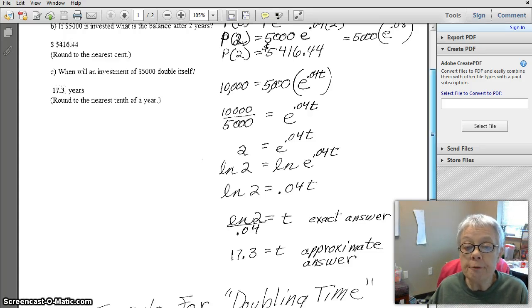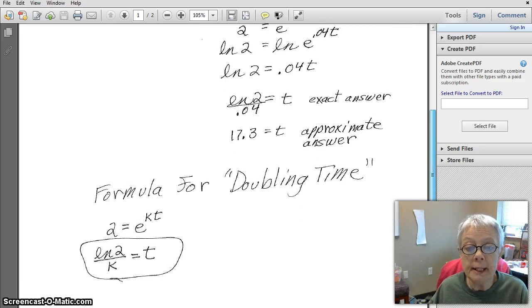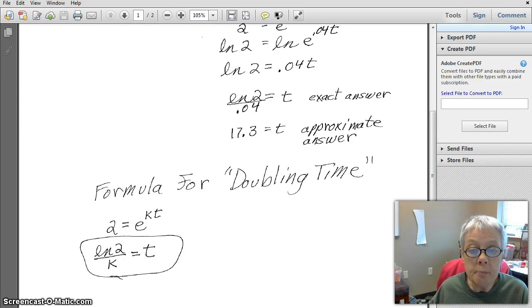But we have a formula for doubling rate, and here it is. You don't need to memorize it. You can derive it yourself, but what that ends up being is the amount of time it takes any principal to double will be the natural log of 2 divided by the interest rate. Okay, talk to you later.